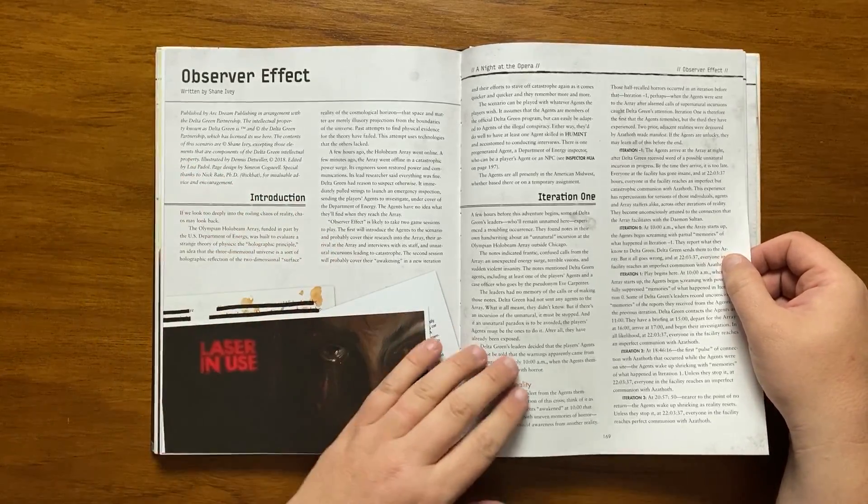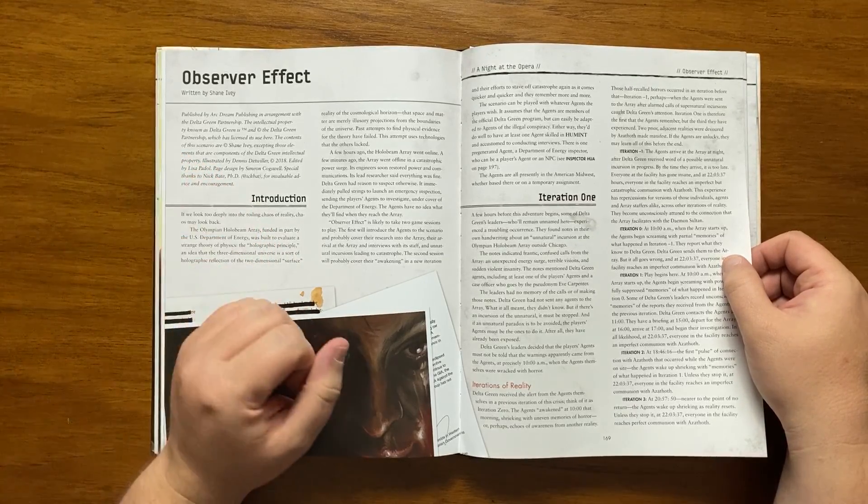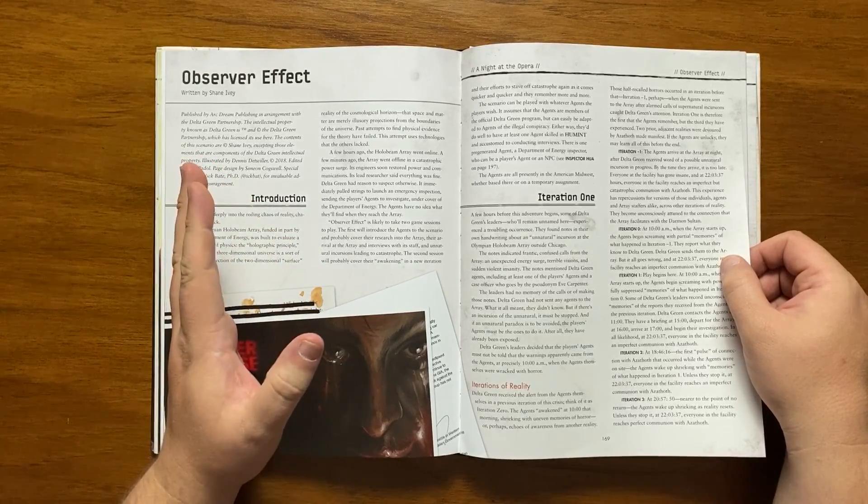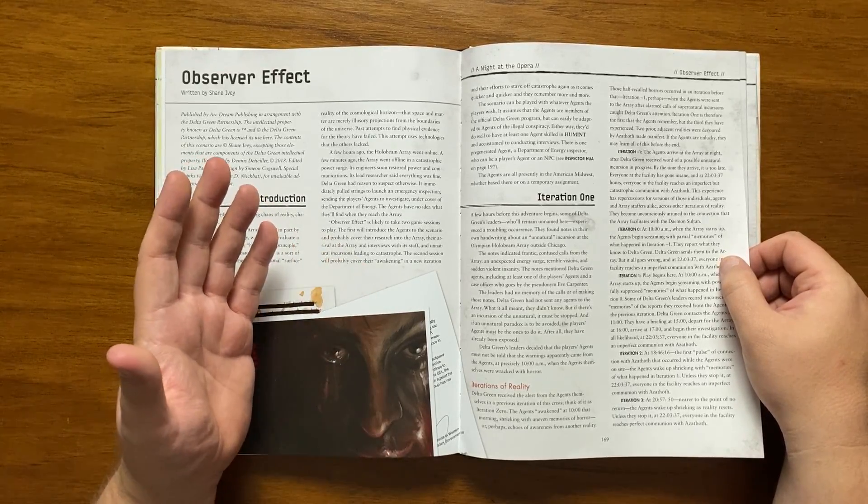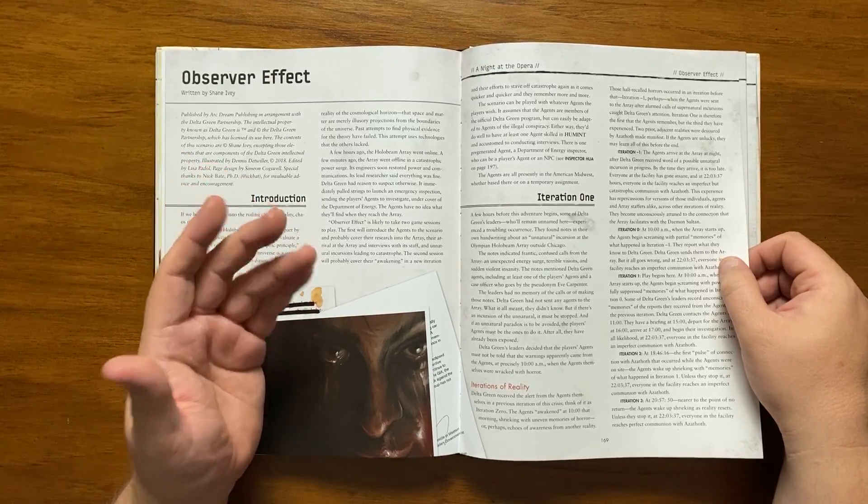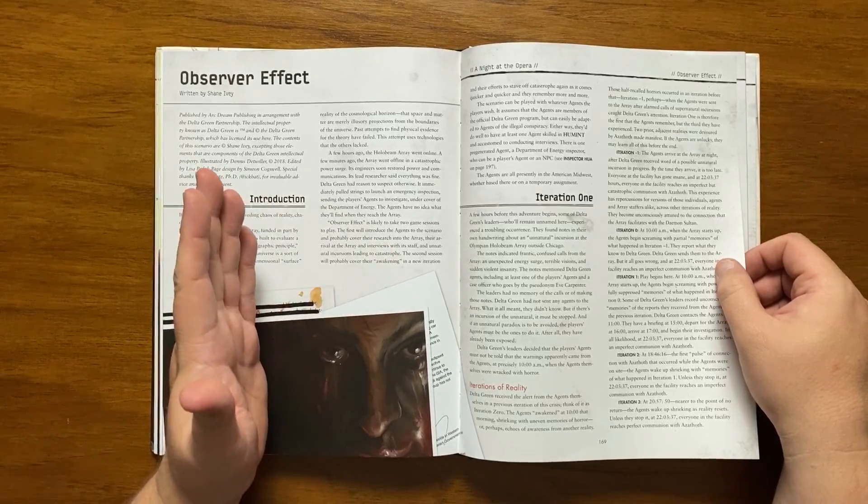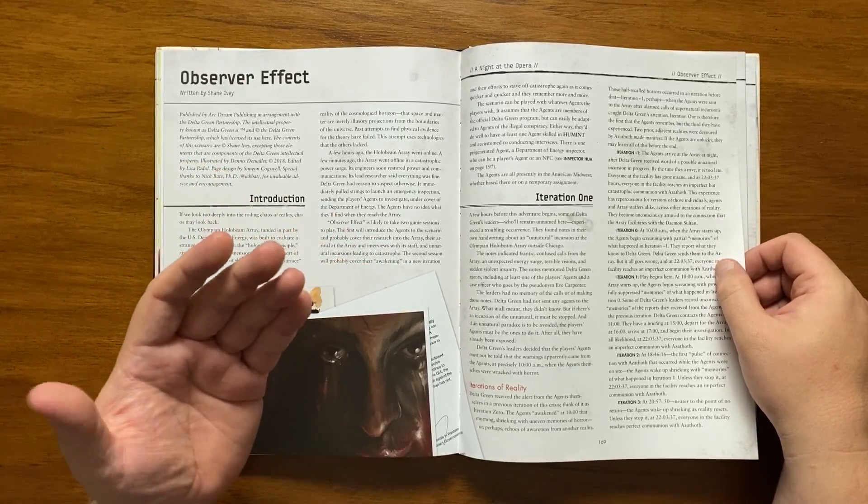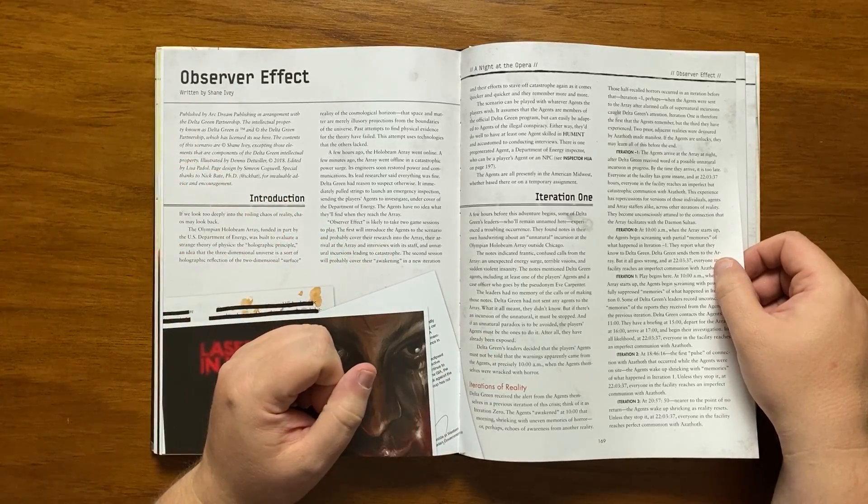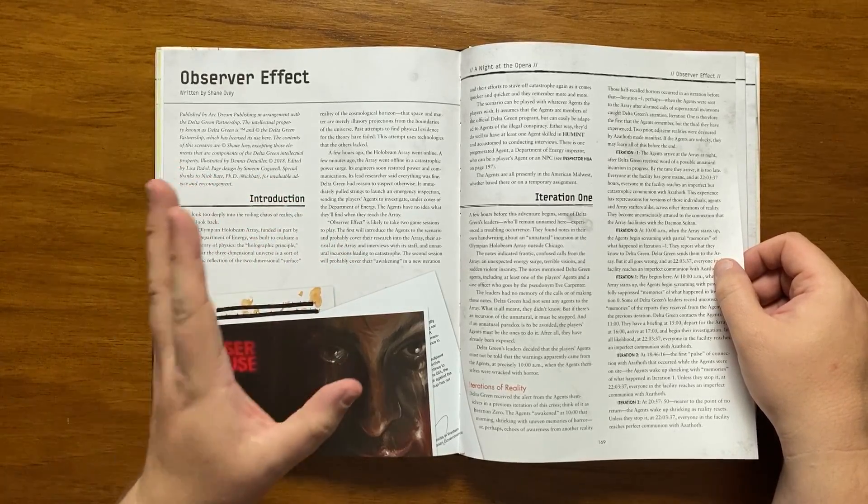First, we move on to Iteration 1. Just a few hours before proceedings begin, an unsettling occurrence happened. Delta Green's leaders found notes in their own handwriting about an unnatural occurrence at the Hollowbeam Array. They indicated frantic calls, an unexpected energy surge, visions of terror and sudden violent insanity. Delta Green agents are mentioned including one of the players and the pseudonym Eve Carpenter, a case officer. Nobody has any memory of any of this as they have not sent any agents to the array, but it sounds suspiciously like an unnatural paradox and the players agents must be the ones to stop it as it seems they've already been exposed.